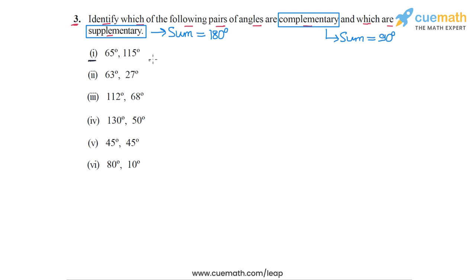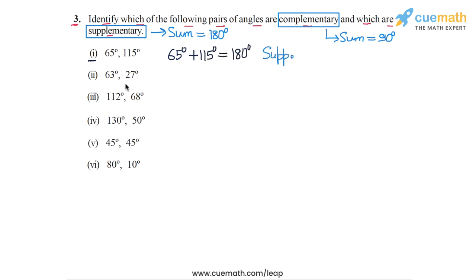Let's start with part 1: 65 degrees plus 115 degrees. Their sum is equal to 180 degrees, so this pair of angles is a pair of supplementary angles.